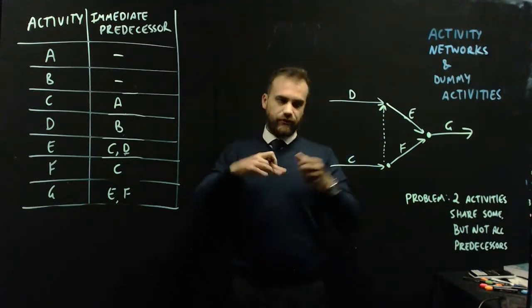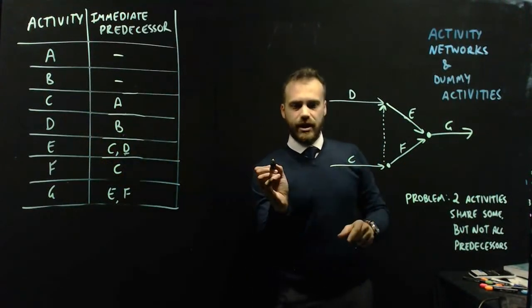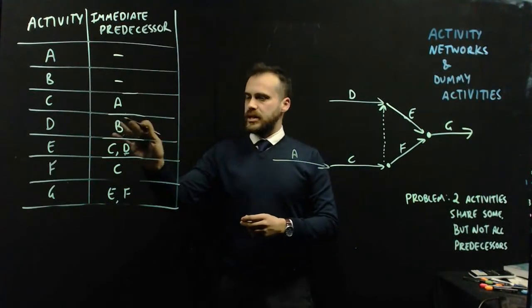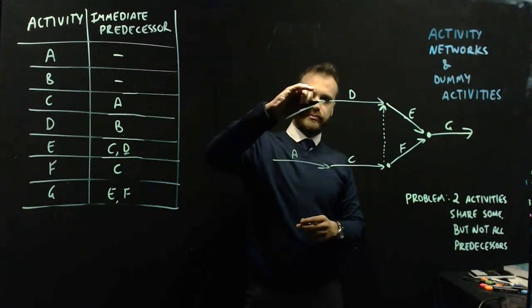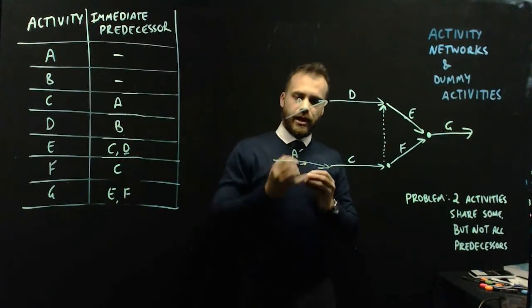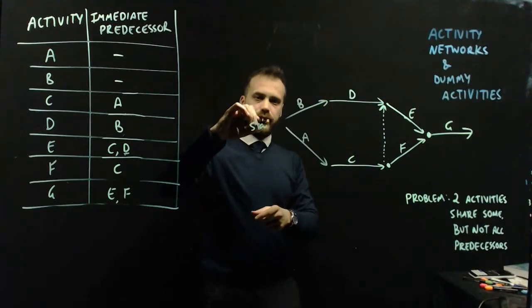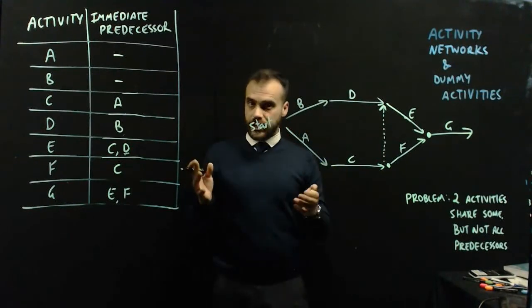We'll just finish this off now. So C has a predecessor of A. D has a predecessor of B. And I really should have drawn A a little more like that. And here is my starting position here. So those are dummy activities.